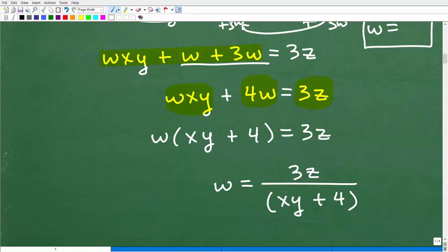But at this point of the problem, if I want to get w by itself and I got w intertwined with these terms, I'm going to have to factor out a w. And I can do that because w is a common factor here. So let's factor out w. So I have w times xy plus 4. Okay, so w times xy plus 4 is equal to 3z.